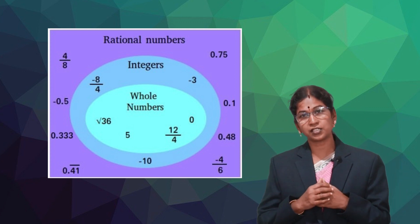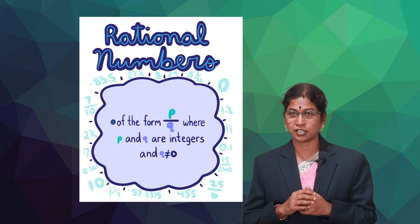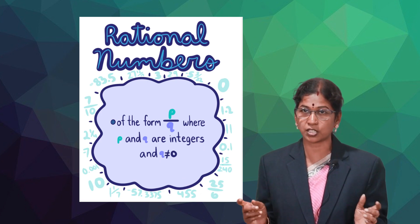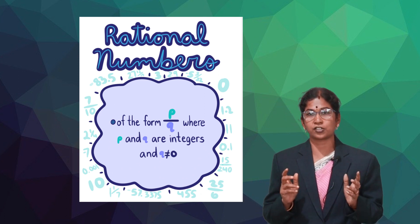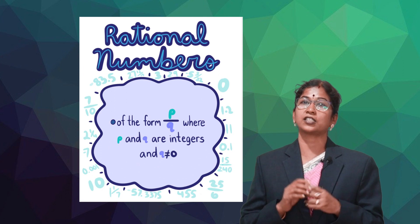The numbers which can be written in the form of P by Q where P and Q are integers and Q not equal to zero are called rational numbers. Rational numbers are denoted by the letter Q.